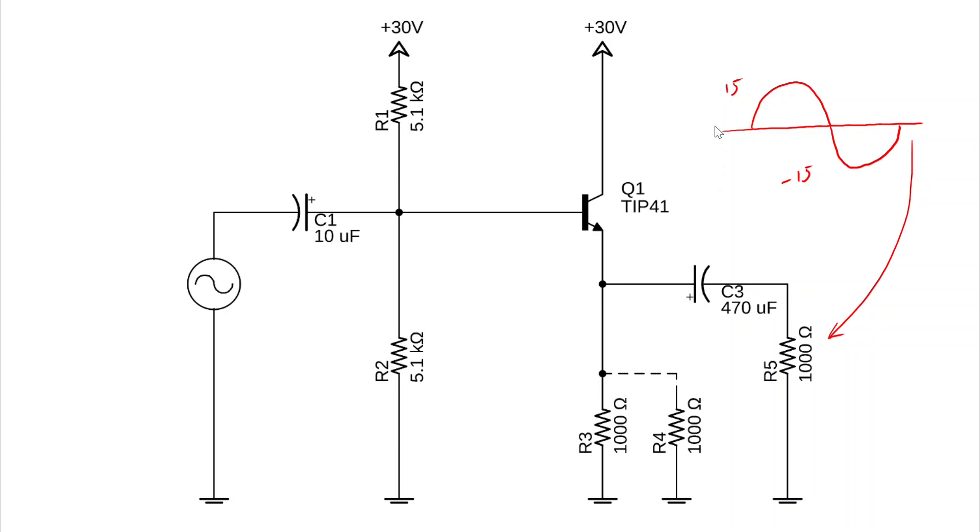So in order to do that, one of the first decisions we'll make is that we want this point right here to be approximately 15 volts. Why 15? Because 15 is half of the power supply which would allow us to swing up to 30 and ideally down to zero.